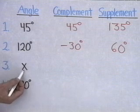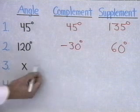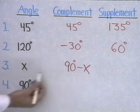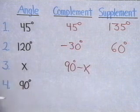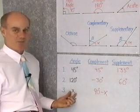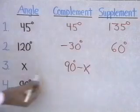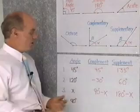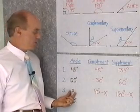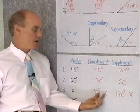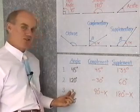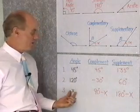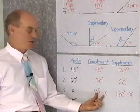Next, I have an angle with x degrees of measure. Its complement is the amount I would add to x to get 90, which must be 90 minus x. So 90 minus x plus x adds up to 90 degrees. For the supplement, it's the amount I would add to x to get 180 degrees — that will be 180 minus x. So if my original angle has x degrees, its complement will always be 90 minus x, and the supplement will be 180 minus x.